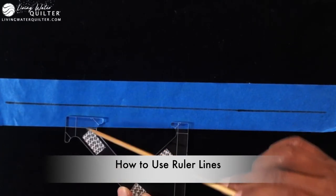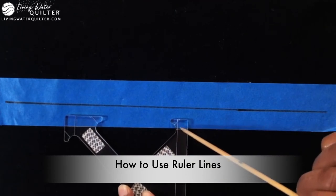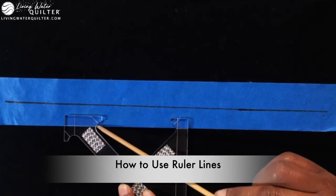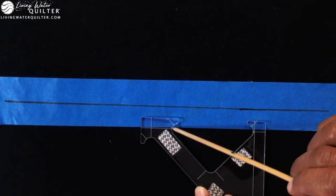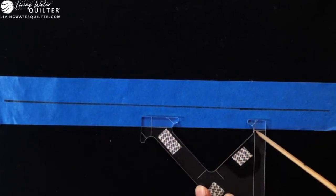Slide the template, always lining up the reference line here and here, and then stitch. Line up the reference line here and stitch. That would be the first row of zigzags.